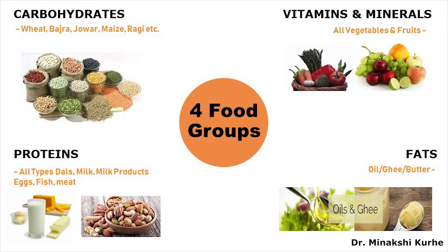Second food group is proteins. This food group is the most important group. We get proteins from milk, milk products, eggs, fish, meat and all types of pulses like tuvar dal, moong dal, masoor dal, soya bean, etc. Proteins are primary structural and functional components of every living cell. Their important function is bodybuilding. Almost half the protein in our body is in the form of muscles and the rest is in bone, cartilage and skin.